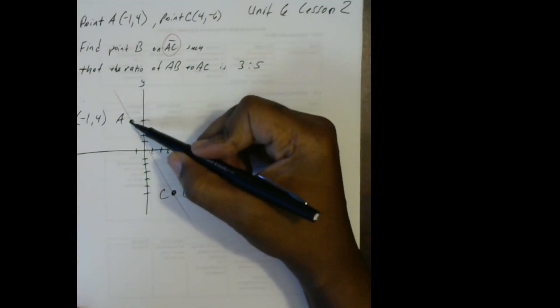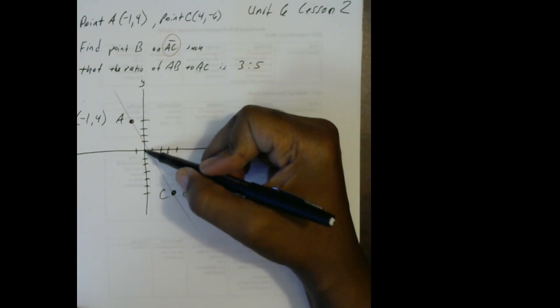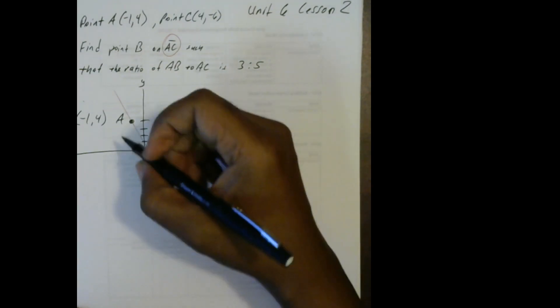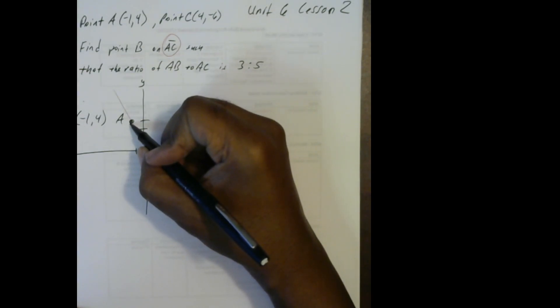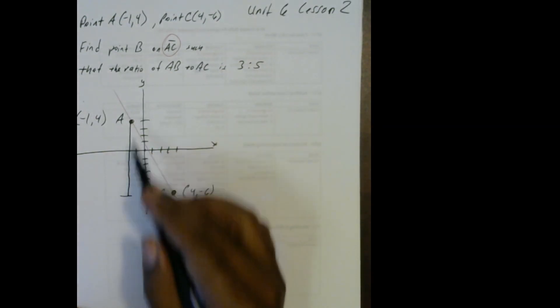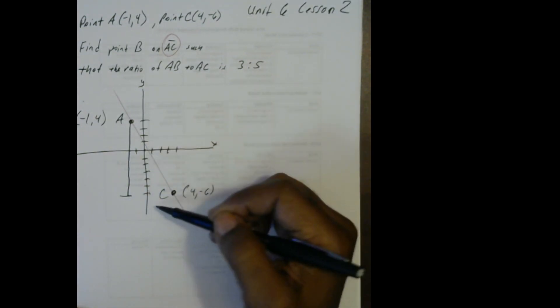To get from A to C, I have to go down 4 times here and then I have to go down 6 more times here. So from here to here, from there to there, that's down 4 and then down 6, so that's a total of 10.